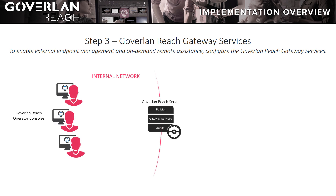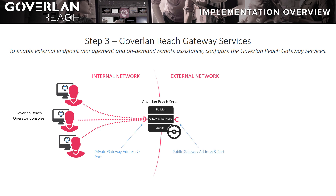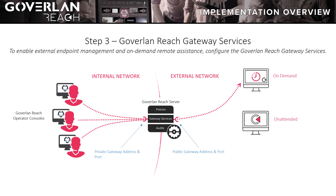After your Goverland Reach Server has been implemented and advertised internally, you will need to configure a private internal-facing network address and port that will be used by your Goverland Consoles. Then, a public external network-facing DNS or IP address and port that will be used by all incoming external connections. This implementation will provide you with the ability to start off-network on-demand sessions, unattended access to off-network or internal devices that roam off-site, and unattended external site management.